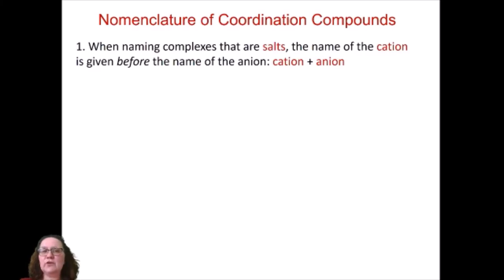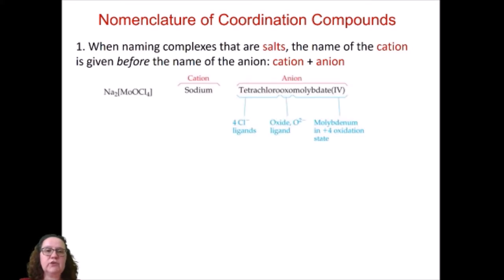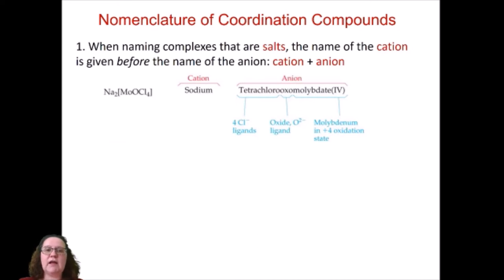We're going to spend a little bit of time learning how to name coordination compounds. As in the case of any salt, the name of the cation is given before the name of the anion. For example, here we have a structure in which the anion is a complex and the cation is sodium ion, so the name of the cation goes first.